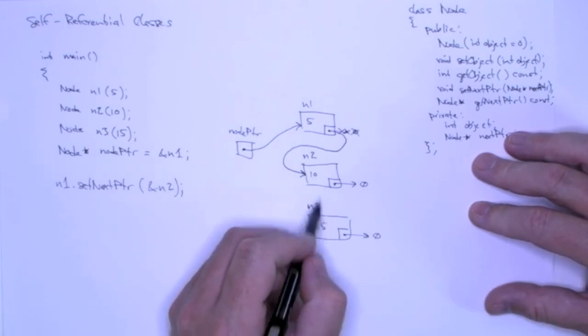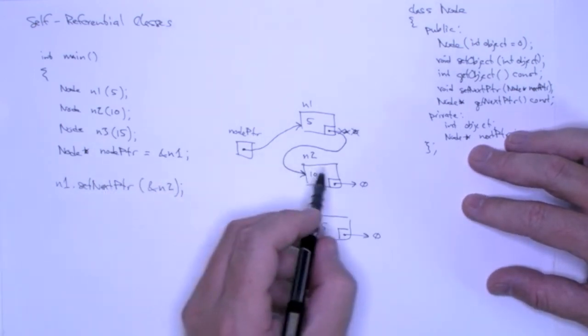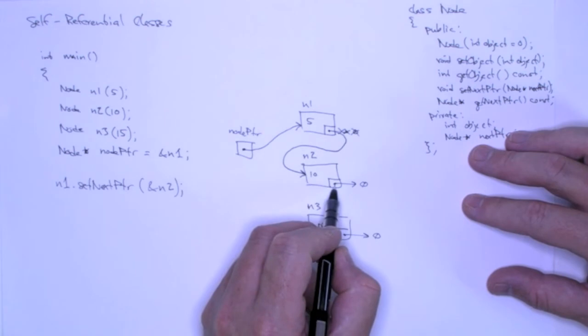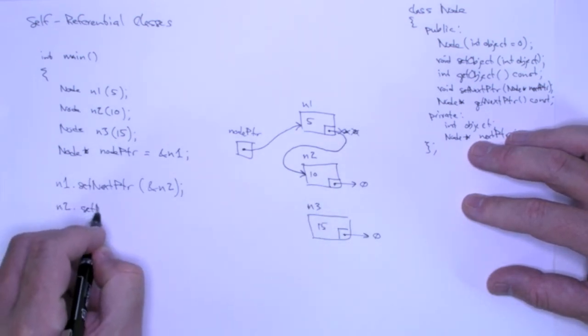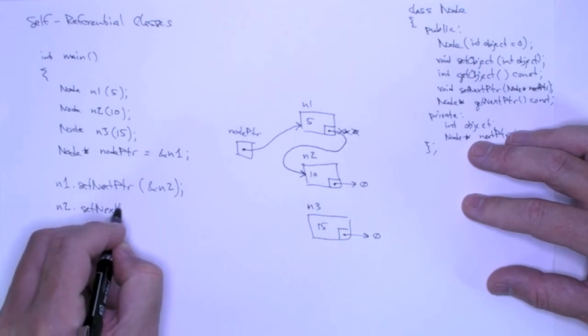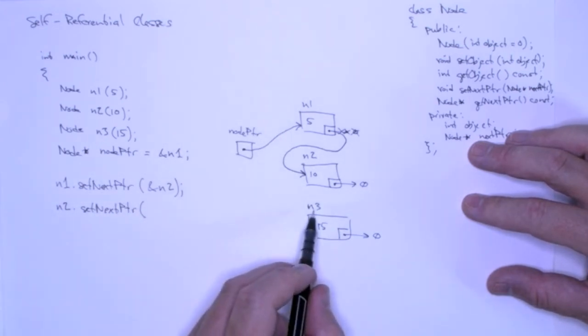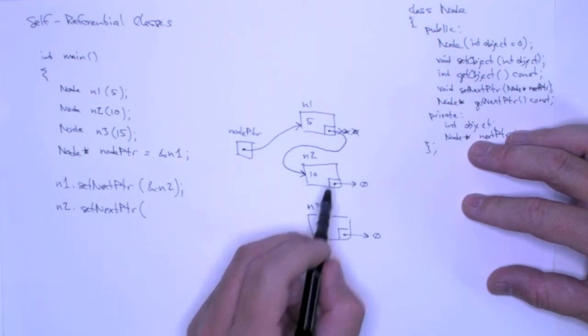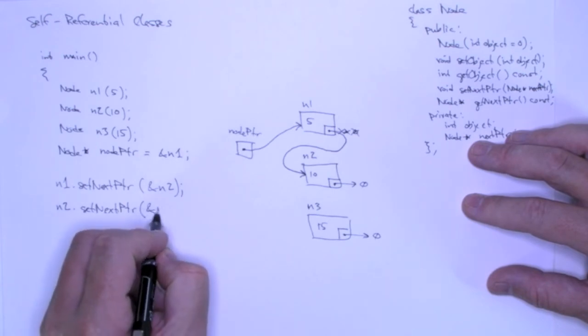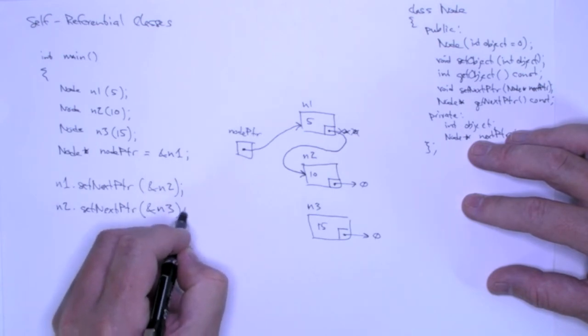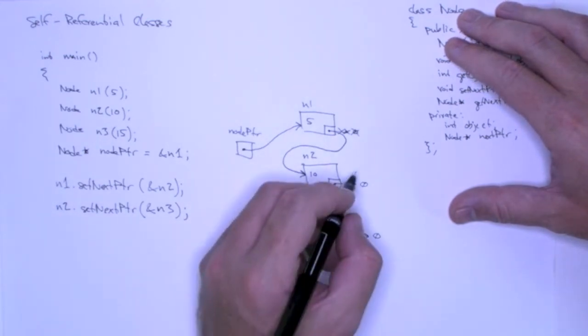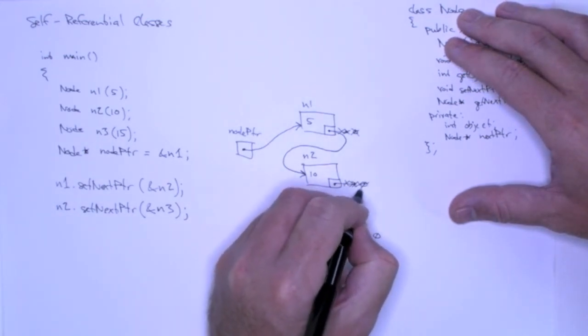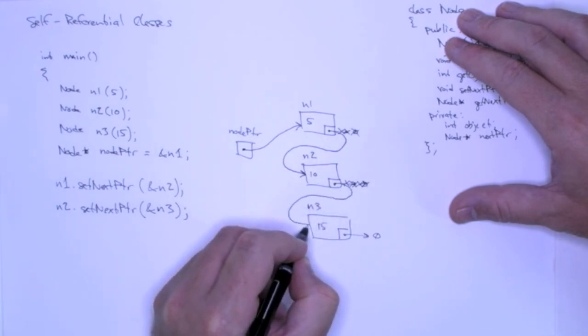Now I want to do the same thing to link up n2 and n3. So I want to set n2's next pointer, so I can say n2.setNextPointer. And to make it point to n3, I have to pass in n3's address. And I can do that using the address operator. After this executes, I'll have a picture that looks like that.